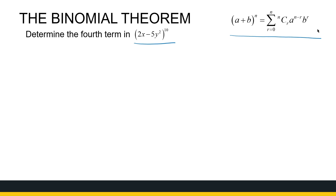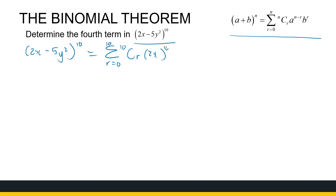So if I've got the binomial theorem, I've got (2x − 5y²)^10. I know it is the sum when r goes from 0 to 10, of 10Cr, (2x) to the power 10 minus r, and (−5y²) to the power r. So if we tidy this up — and we need to tidy this up just to make our lives easier — that is r goes from 0 to 10 of 10Cr.